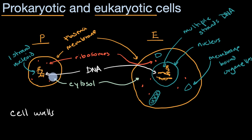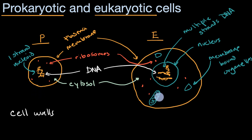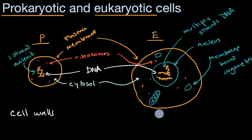Prokaryotic cells are generally going to reproduce asexually, not using sexual reproduction — we'll talk more about that in other videos. Eukaryotic cells, depending on which type you're talking about and where they are in a larger organism, some can reproduce sexually while some will reproduce asexually.